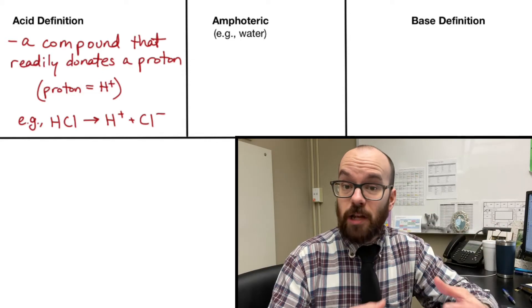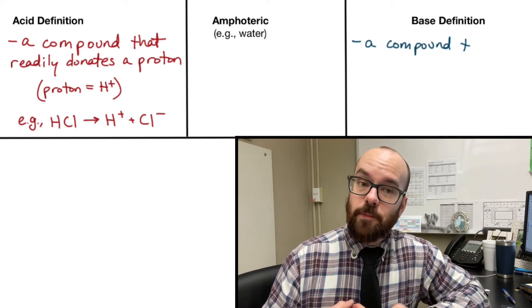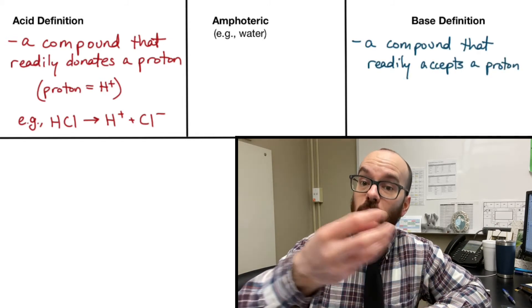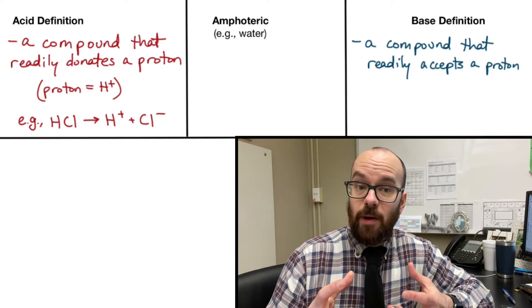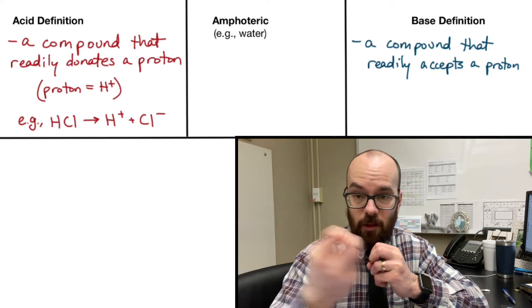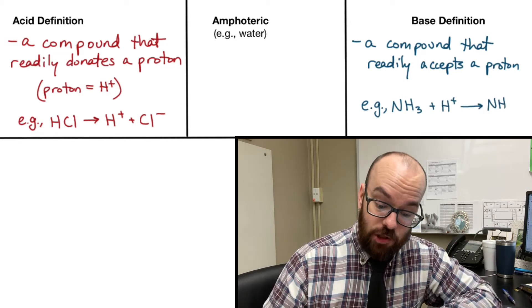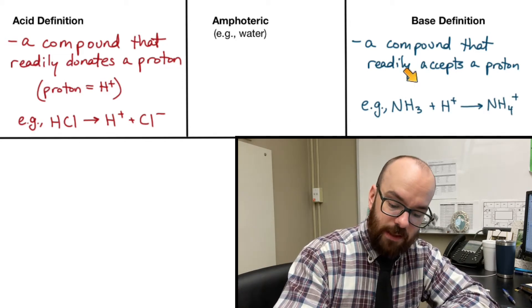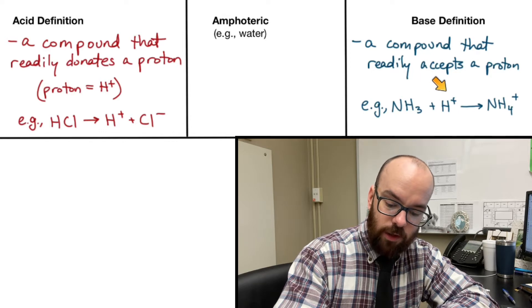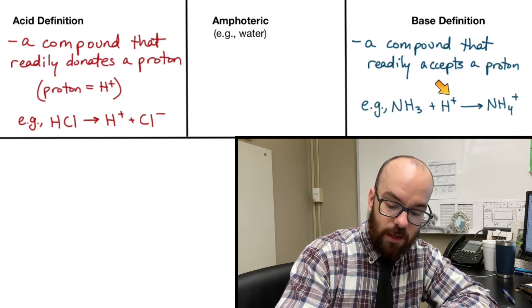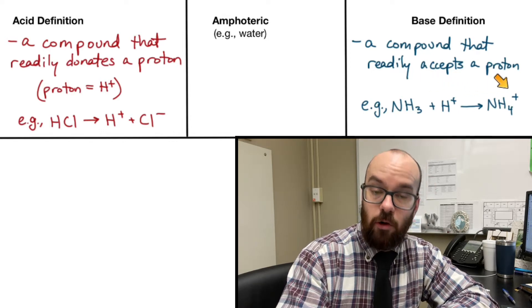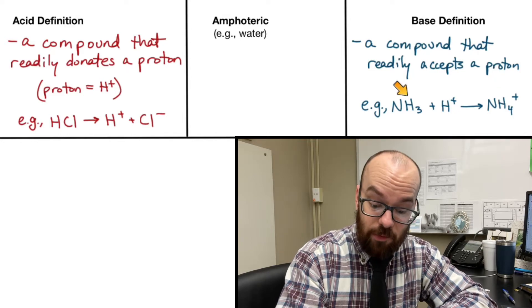Whereas an acid is a proton donator, a base is a proton acceptor. So where does that H+ go? It's going to go to a base. Any compound that's going to take a hydrogen from another molecule, that's going to be a base. An example of that is NH3. NH3 can accept a hydrogen, we see that here in this reaction. NH3 will accept a hydrogen ion or a proton and become NH4+, so NH3 would be a base.